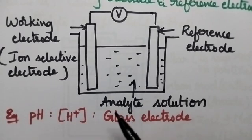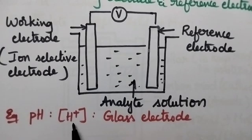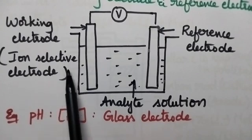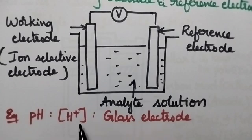For example, if we want to measure the pH of the solution — pH means the negative logarithm of H⁺ ion concentration — directly measuring the H⁺ ion concentration gives the pH of the solution. In that case, the ion selective electrode should be a glass electrode, which is generally used to measure H⁺ ion concentration.